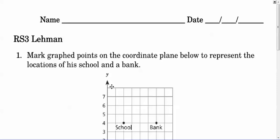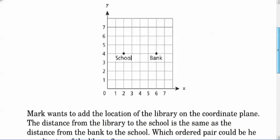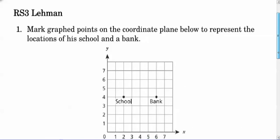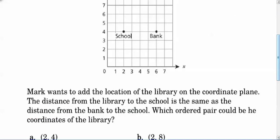So the first question here says Mark graphed points on the coordinate plane below to represent locations of a school and a bank. Mark wants to add the location of the library on the coordinate plane. The distance from the library to the school is the same as the distance from the bank to the school.